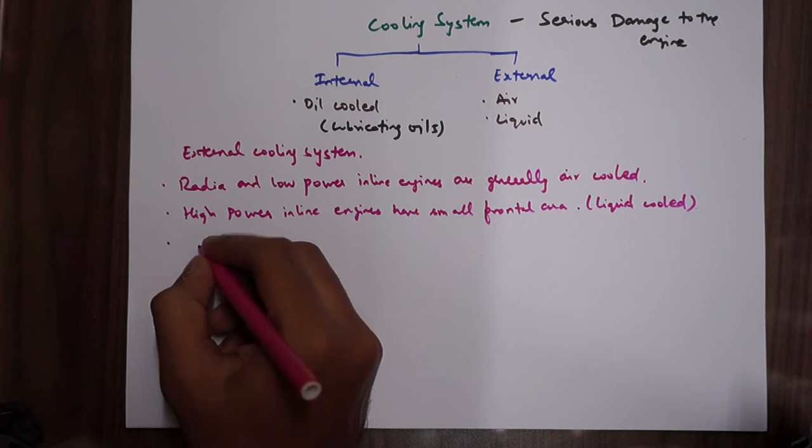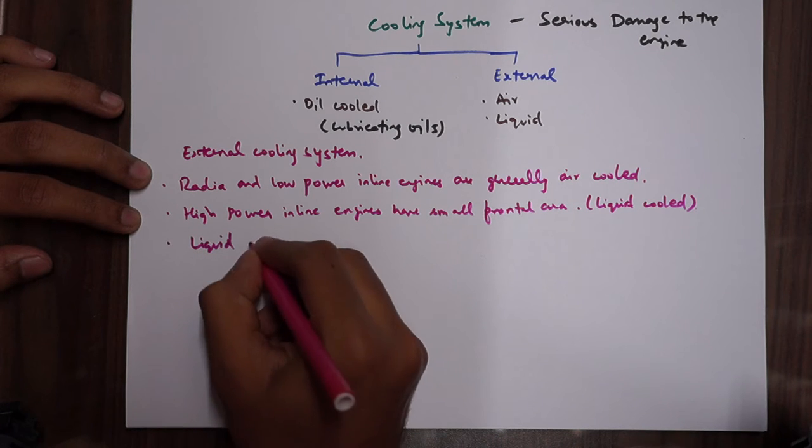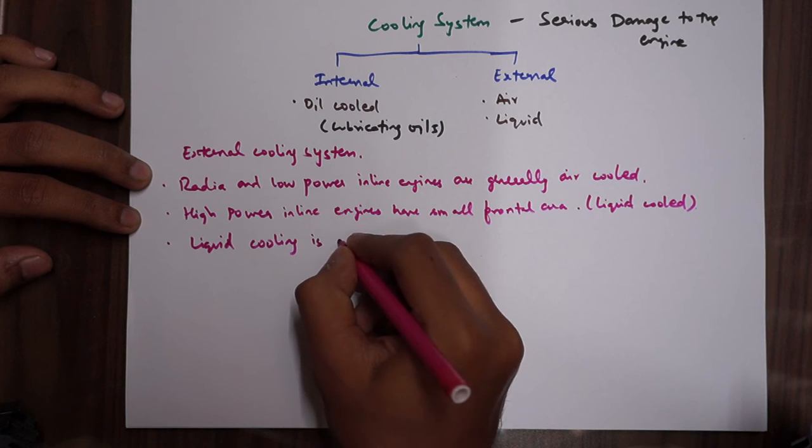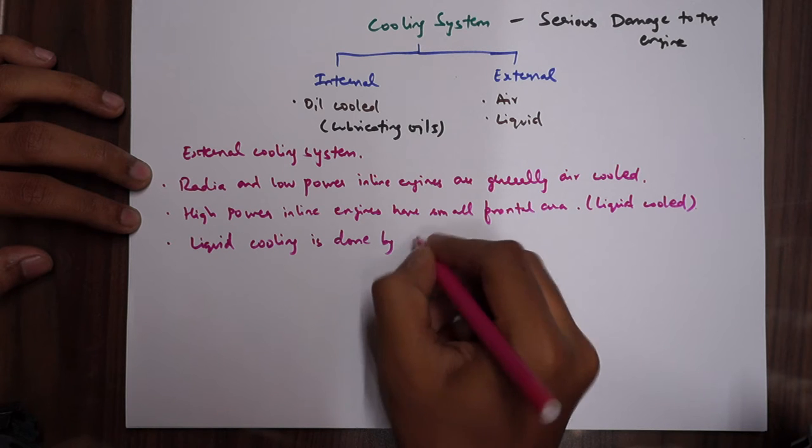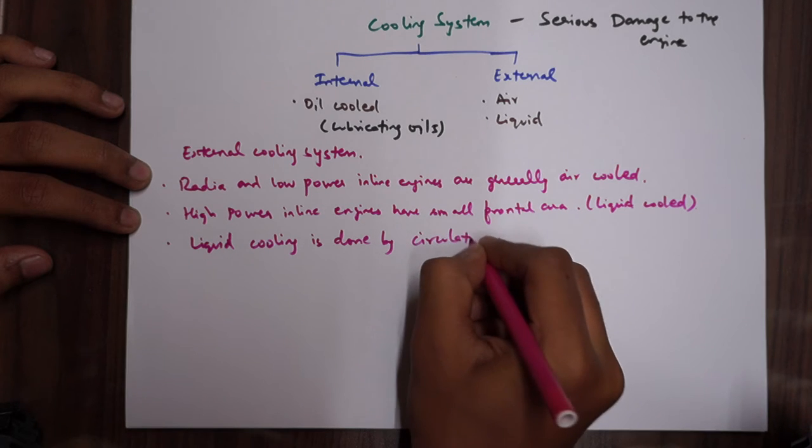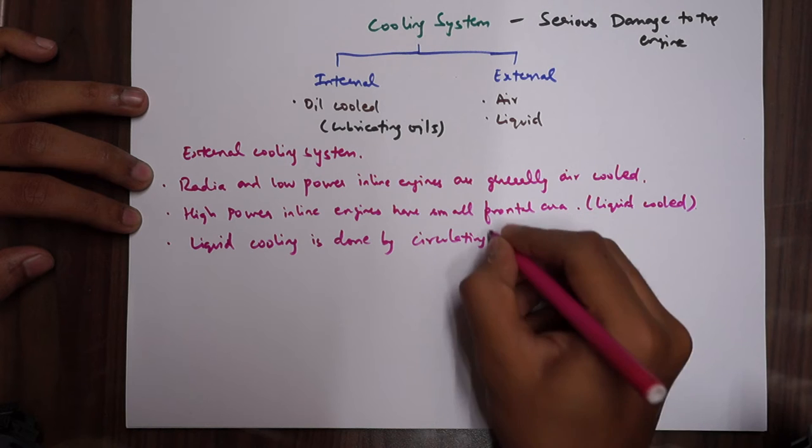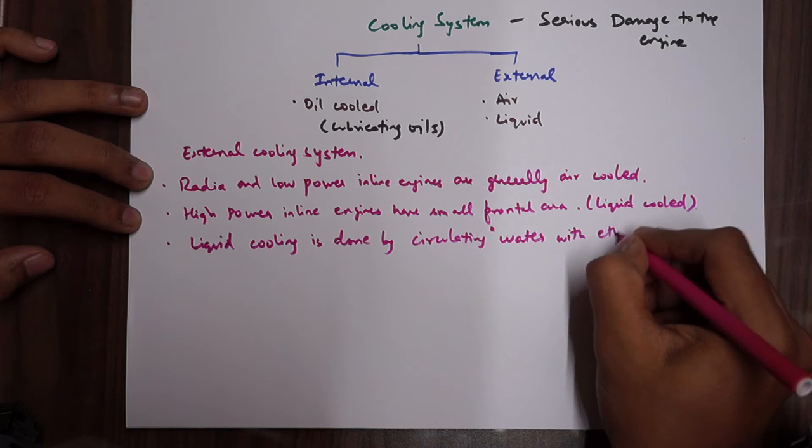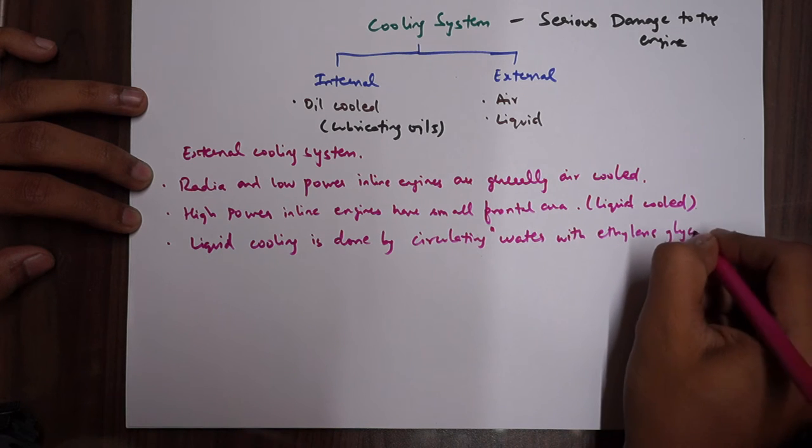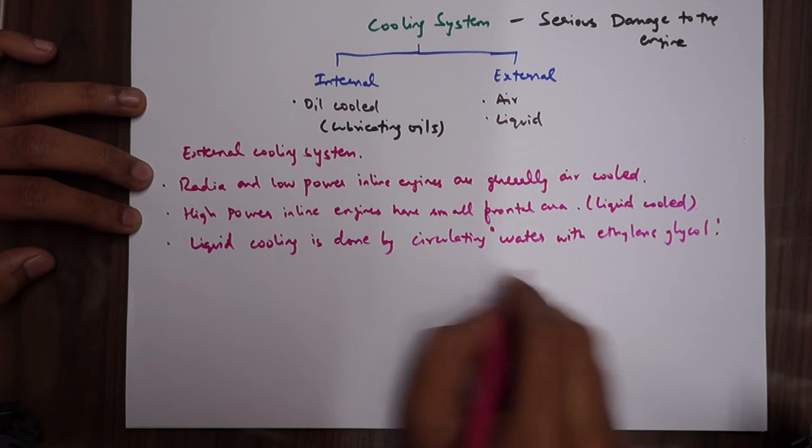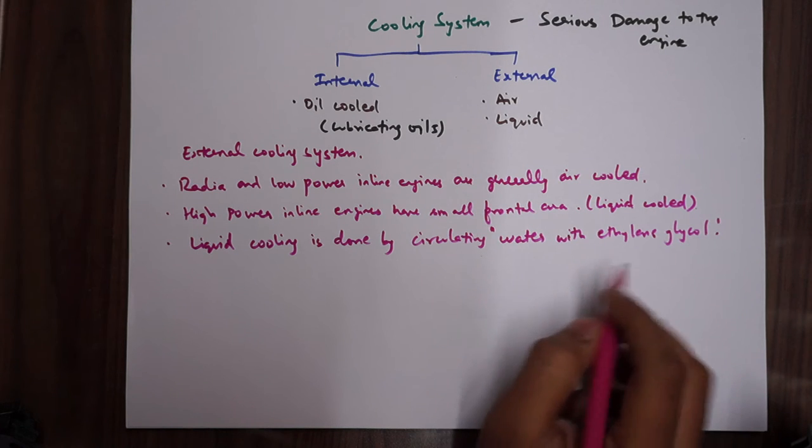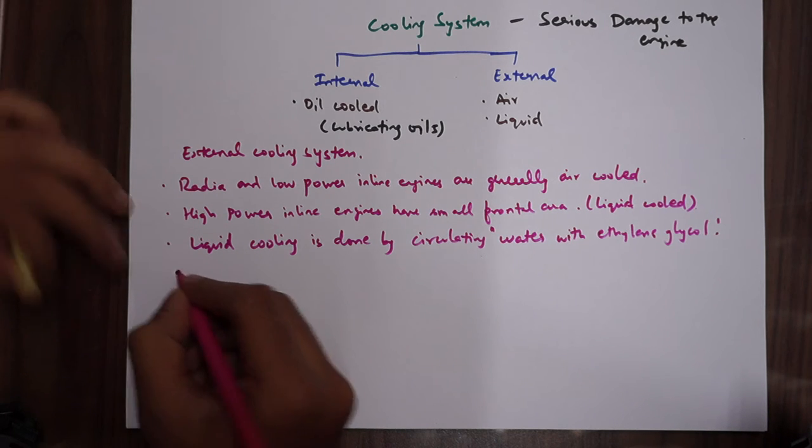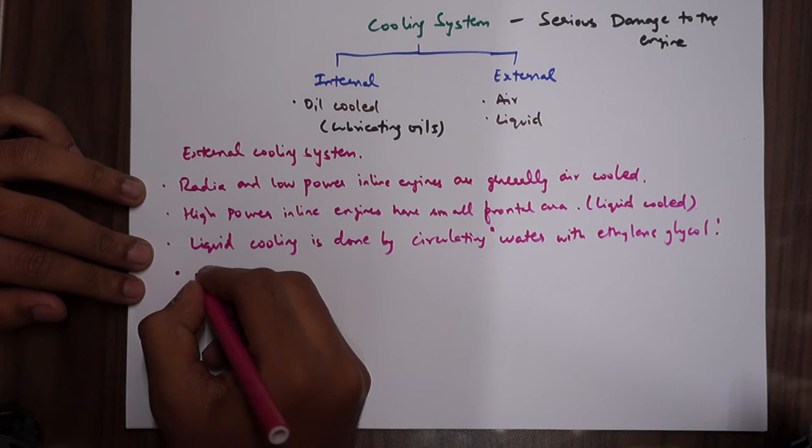How is liquid cooling done? Liquid cooling is done by circulating water mixed with oil and ethylene glycol. This is the coolant and this is circulated around the cylinders of the engine.